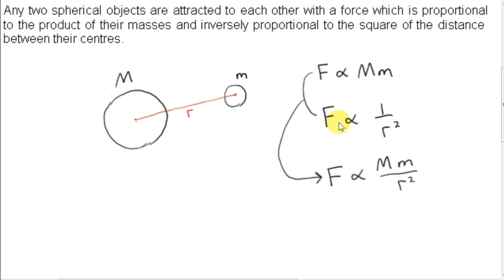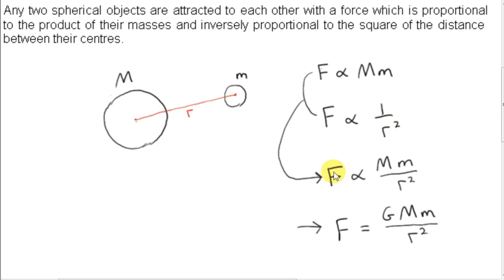We can combine these two proportionality relations into a single proportionality relation. If I double big M, I double the force. If I double little m, I double the force. If I double r, the distance between the centers of the masses, the force goes down by a factor of four. Everything follows if I just combine these two relations together. If one quantity is proportional to another quantity, it means that the first quantity must be a constant scalar multiple of the second quantity.